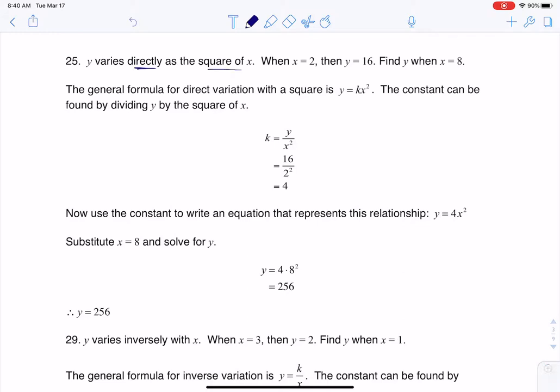y varies directly as the square of x. We were given our complete set of information, our ordered pair, and then we were told to find y when x is 8. So whenever you hear varies directly, we're going to go with multiplication, multiply, and then if you hear square of x, you need to account for that.